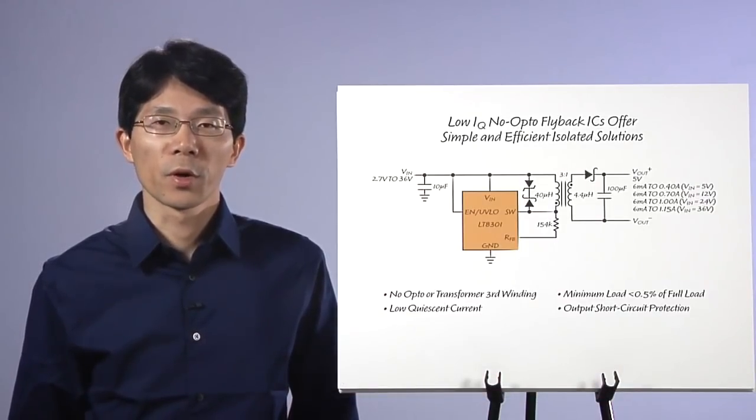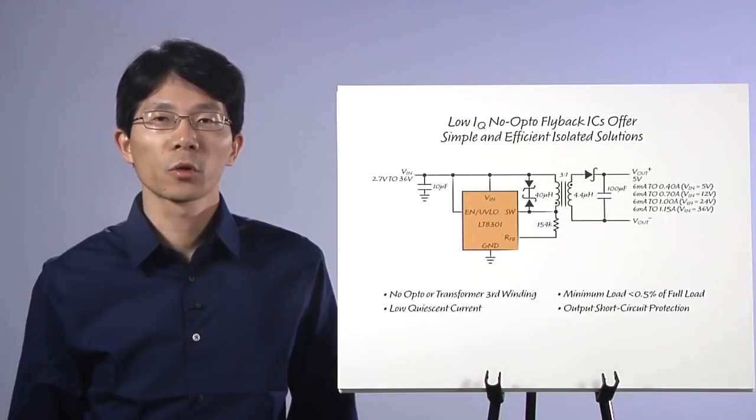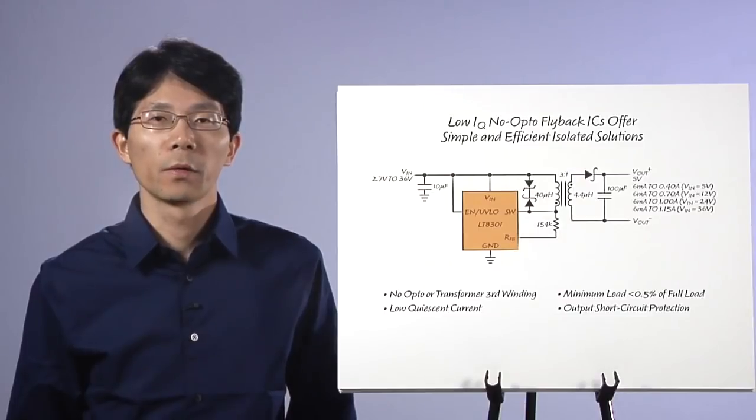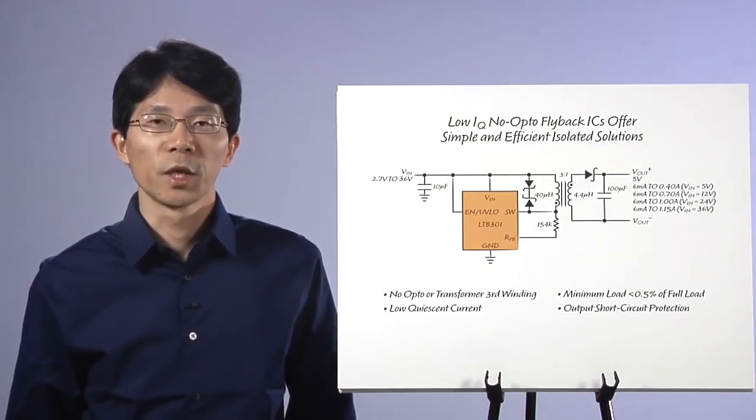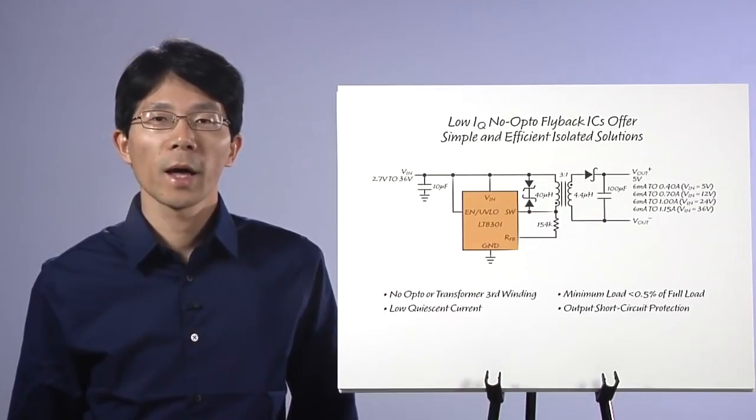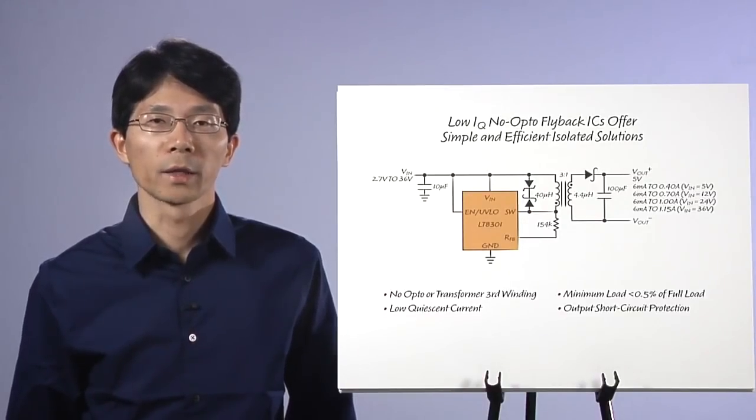The flyback converter is typically the first choice for engineers looking for isolated power supplies below 50 watts. These isolated power supplies generally require opto-isolators or extra transformer windings to regulate the output voltage.